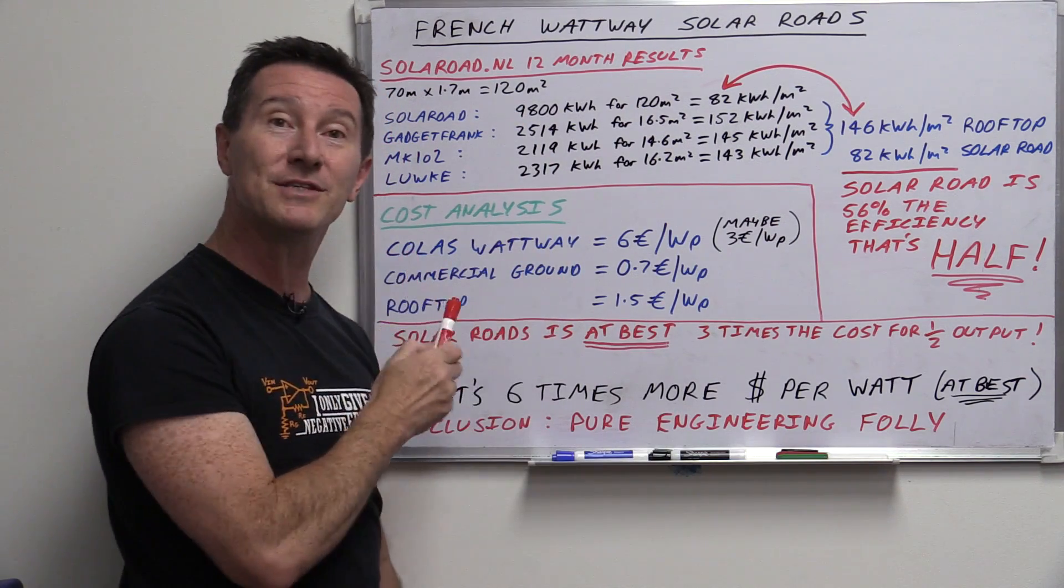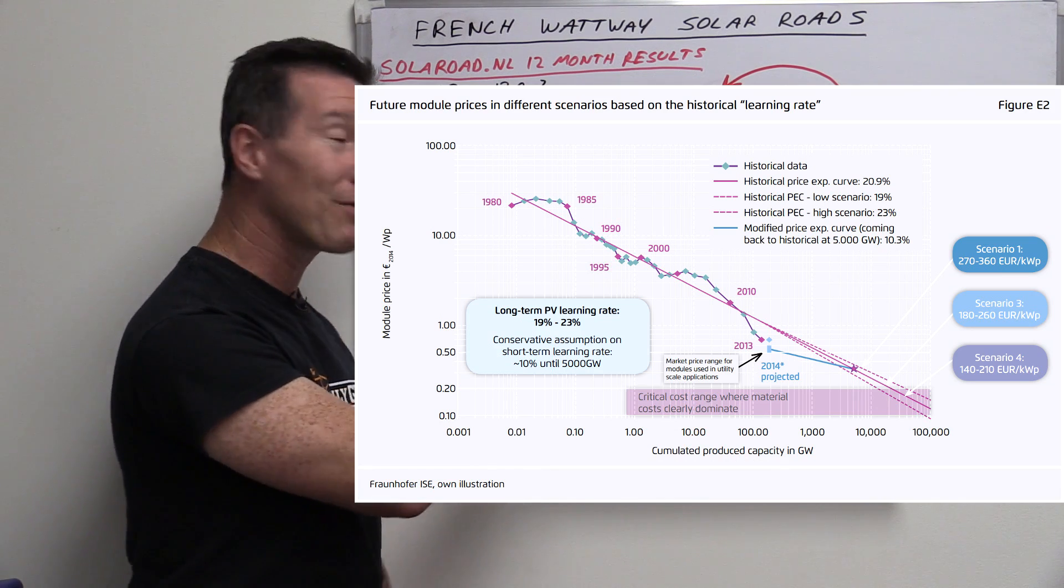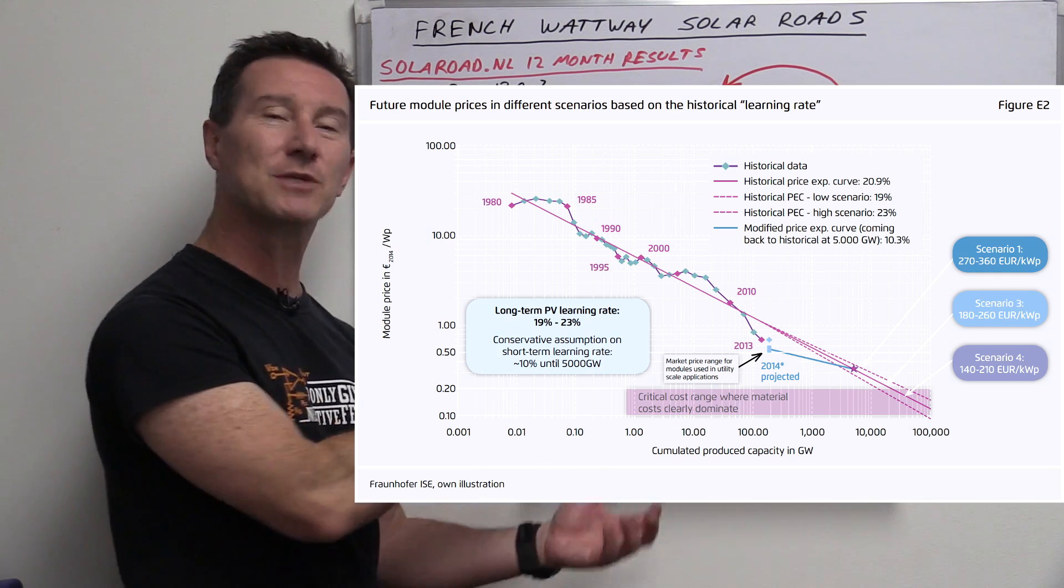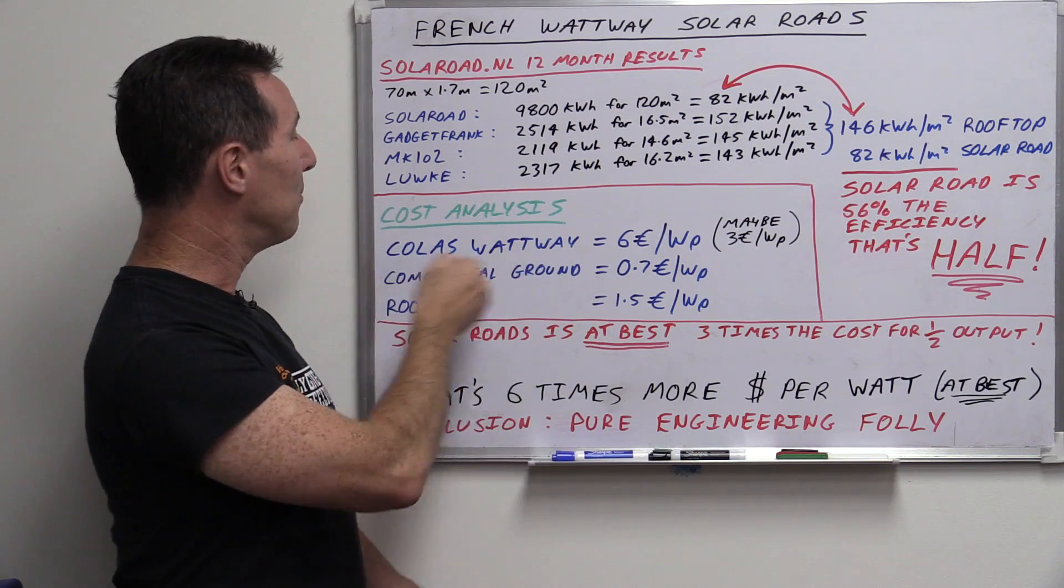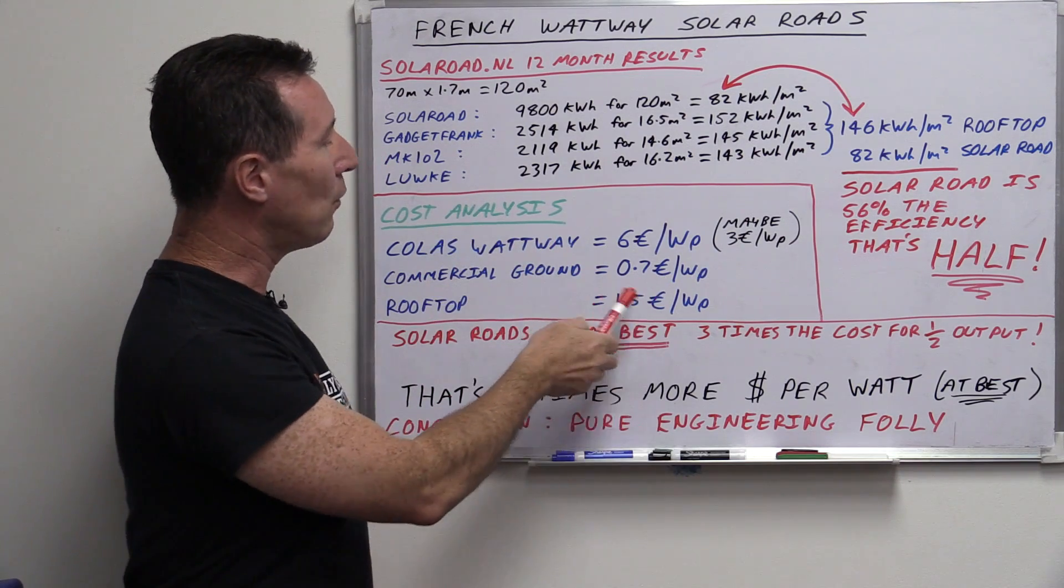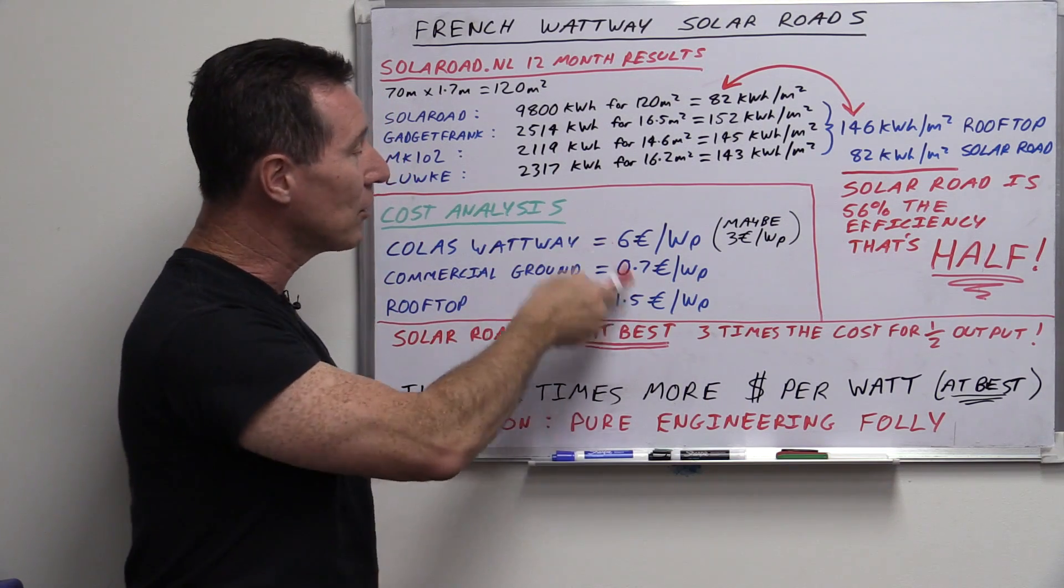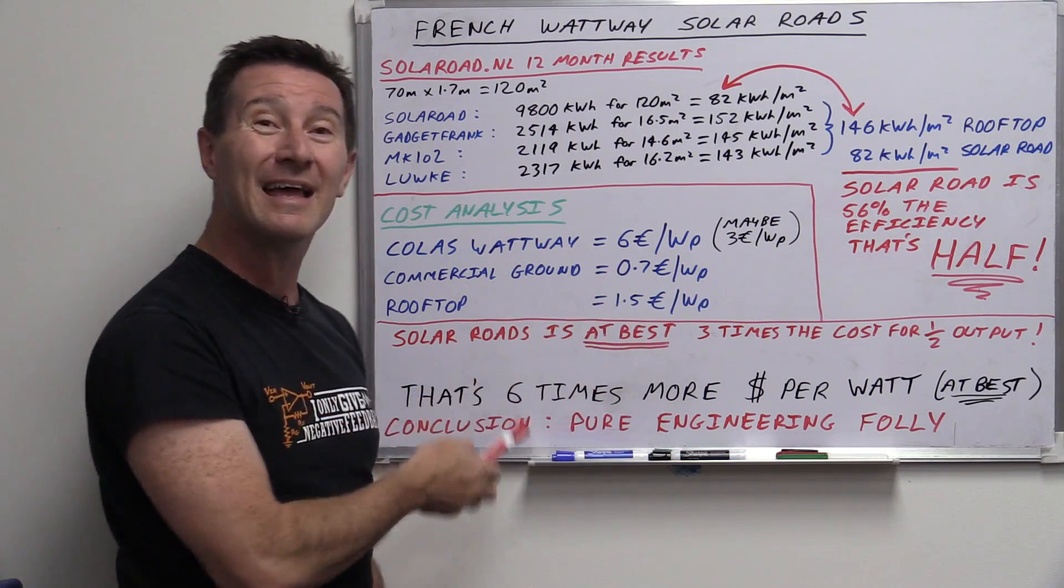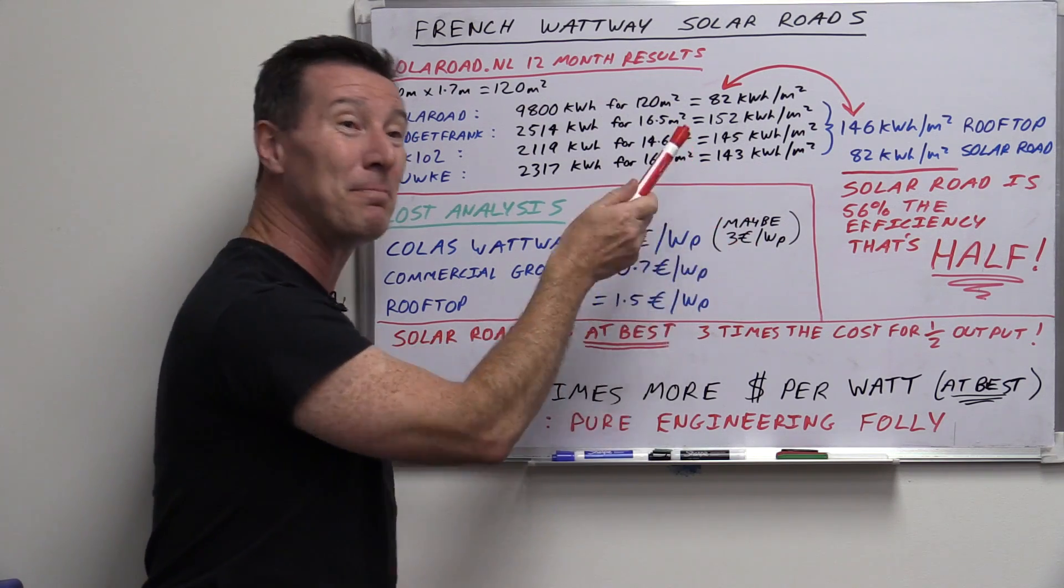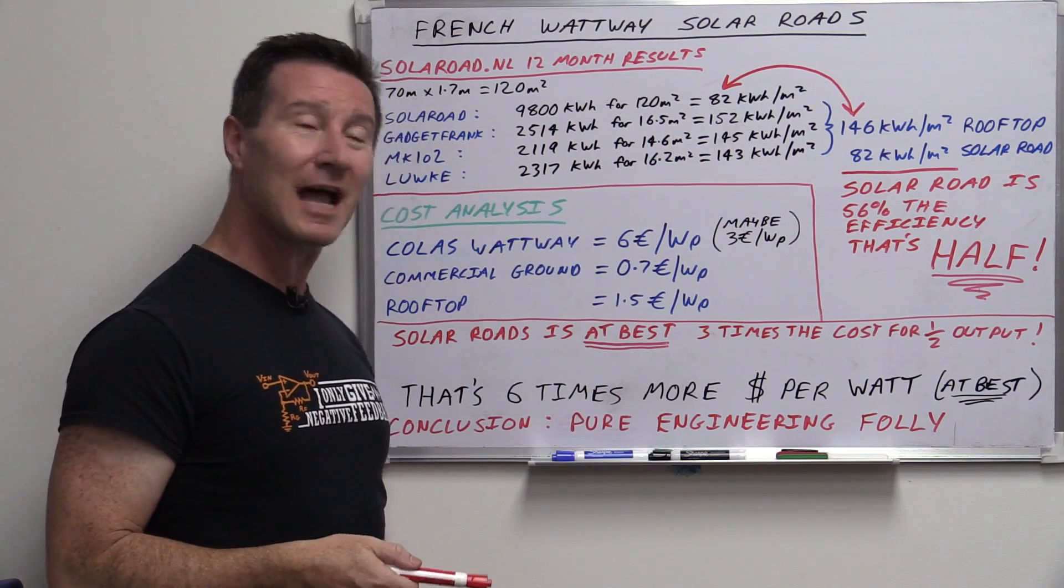Now, commercial ground-based systems, here's some data from about 2013-14, and it is already down to about 0.7 euros per watt peak. And rooftop systems are generally considered to be about double a commercial installation. Commercial one is actually going to be higher efficiency, lower cost, than a rooftop system. But even a rooftop system, around about double the cost, one and a half euros watt peak, rooftop systems are still going to be twice as good as the absolute best case theoretical ballpark figure that the CEO of Colas has come up with.